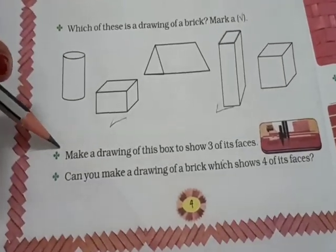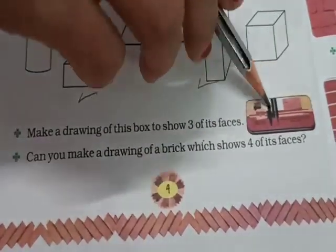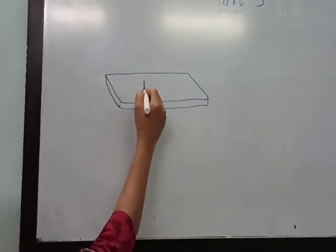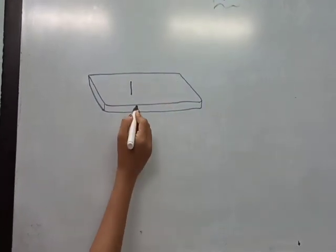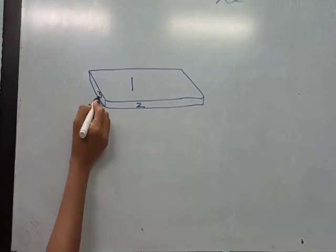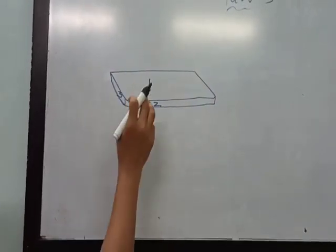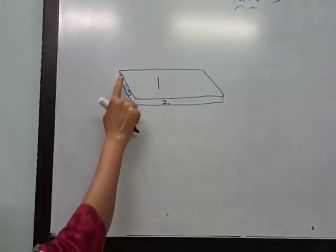Next question on the same page: make a drawing of this box to show 3 of its faces. What is this? It is a compass box. Now you have to draw the compass box showing 3 faces. Look at the board — see here: this is one face, this is 2, and this one is 3. This is how you have to draw the compass box showing 3 faces.